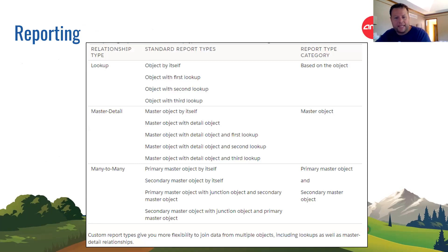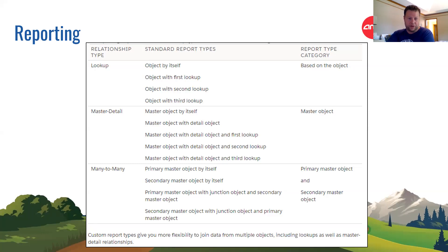Ownership, sharing, and security can all be independent for lookup relationships — unlike master-detail where everything is inherited from the parent. For reporting with lookups, you can do standard report types on an object with itself or with first, second, or third lookup objects. Master-detail reporting can be done off the master or detail. For many-to-many junction objects, you can base reports off the first or second master, or traverse from secondary through the junction to the primary.